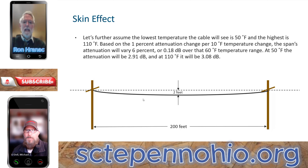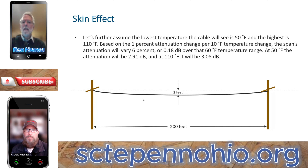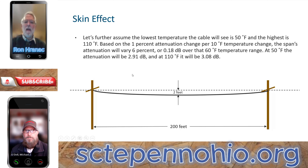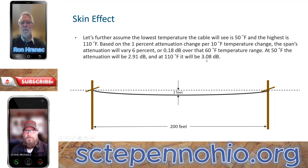Let's pretend our hypothetical cable system is in a mild climate where the coldest temperature is 50 degrees Fahrenheit and the highest in summer is 110 degrees Fahrenheit — a 60-degree swing between winter and summer. Following the general guidance that attenuation changes 1% in decibels per 10 degree Fahrenheit temperature change, that means our roughly 200-foot span of cable will vary 6% in attenuation — 0.18 dB over that 60-degree range. At 50 degrees, attenuation will be 2.91 dB between the two poles.